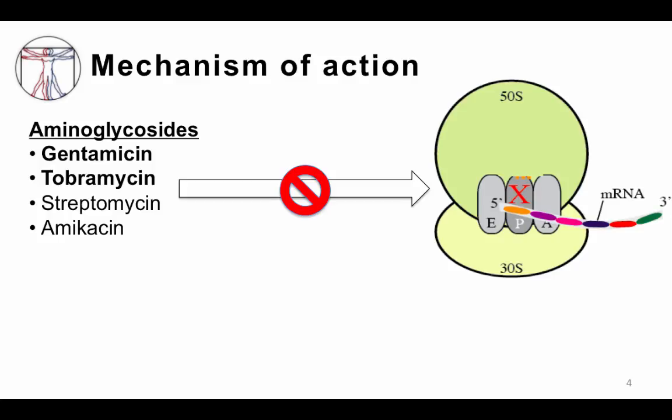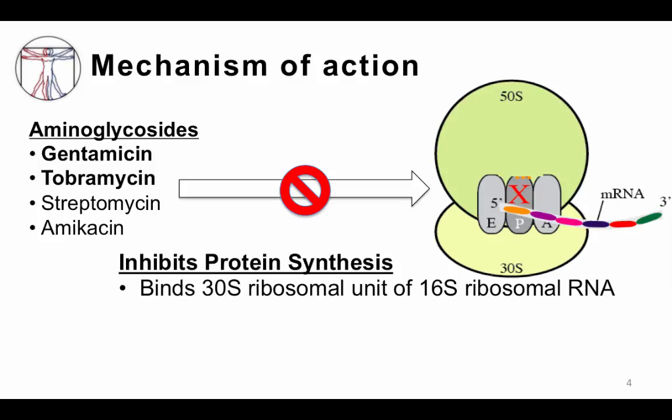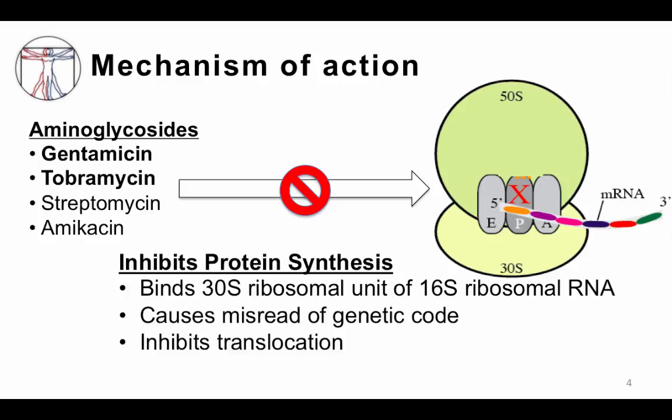They inhibit protein synthesis by binding the 30S ribosomal unit of 16S ribosomal RNA. By doing this, they cause misread of genetic code and inhibit translocation, ultimately leading to bacterial death. Therefore, they are bactericidal antibiotics.